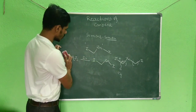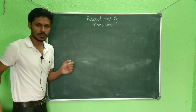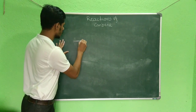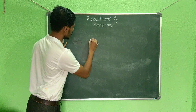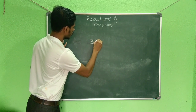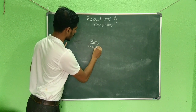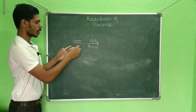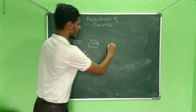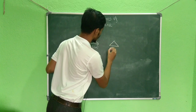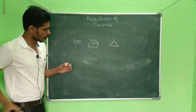The Simmons-Smith reaction is a very convenient method for the synthesis of cyclopropane. If you have any alkene and treat it with CH₂I₂ in the presence of a zinc-copper couple in diethyl ether (Et₂O), the zinc carbenoid is formed in situ, and then you obtain the cyclopropane ring.